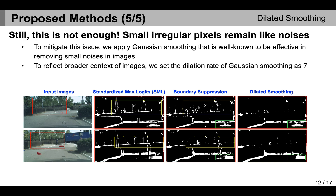However, this is not enough. We found that there still exist irregular pixels remaining which may work as noises. In order to mitigate this issue, we apply Gaussian smoothing which is effective in removing small noises. Additionally, we set the dilation rate of the Gaussian smoothing as 7 in order to reflect the broad context of images.